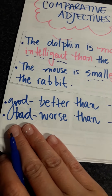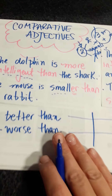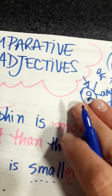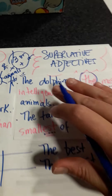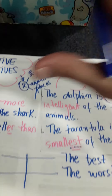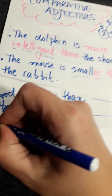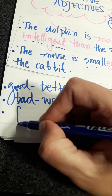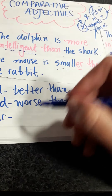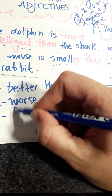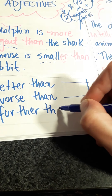So, 'bad' is for only one, 'worse than' is when you talk about two, and 'the worst' is when you talk about three or in your life. The other exception is 'far'. To compare, you say 'further than'.